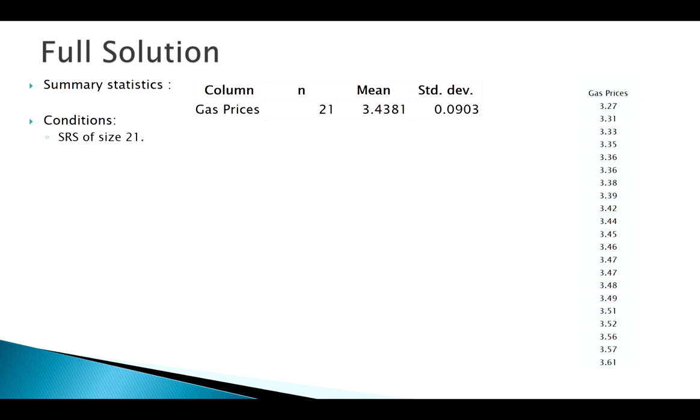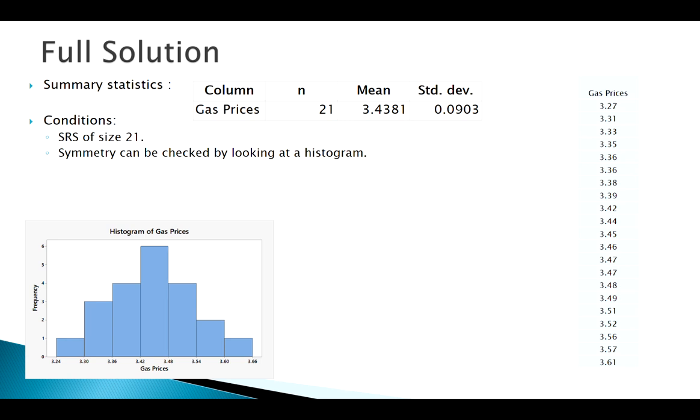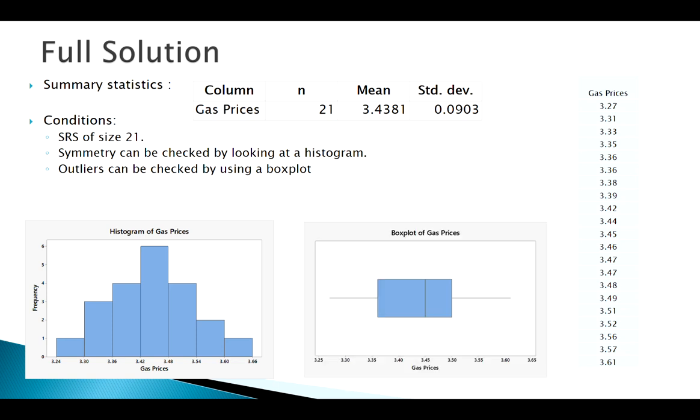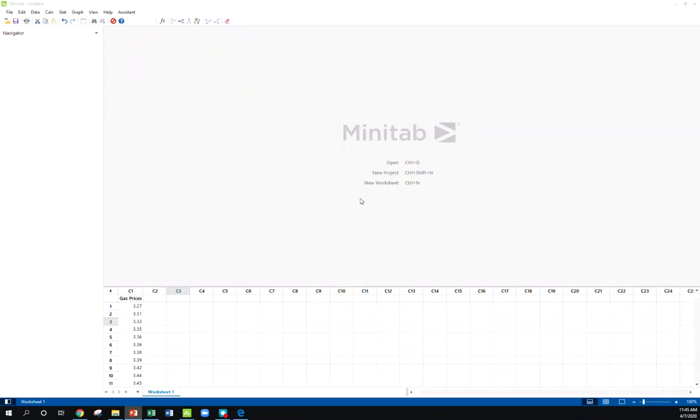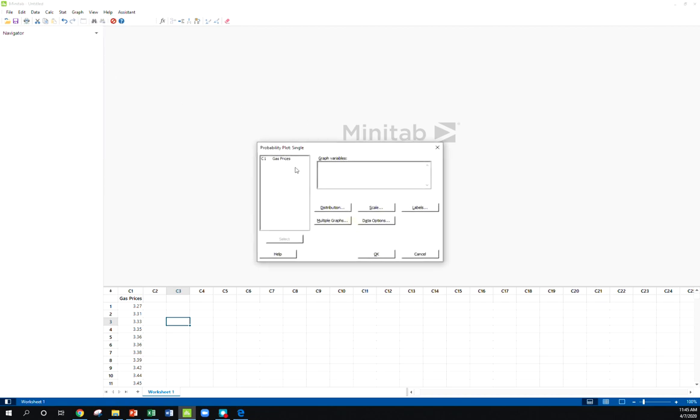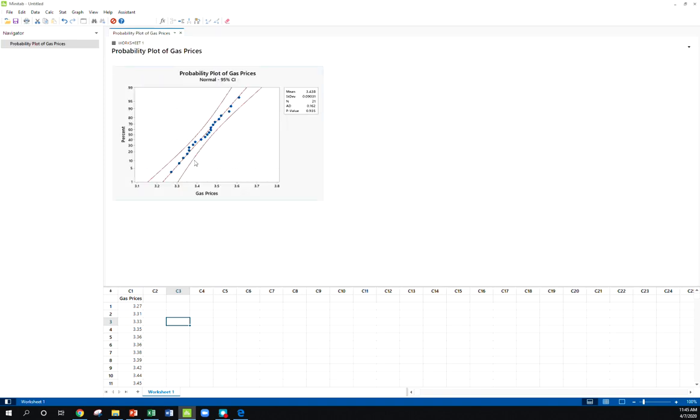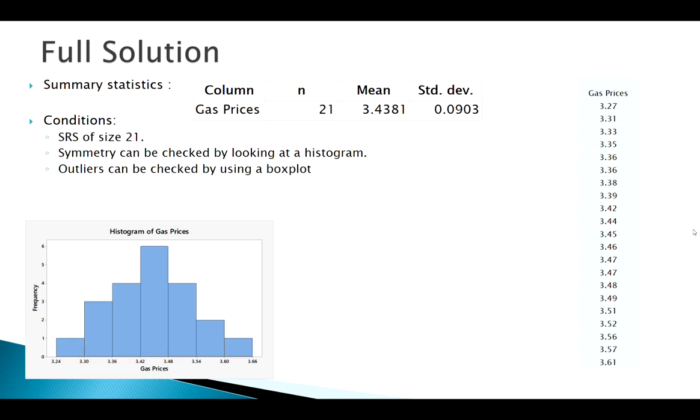We want to use t, but our conditions—we don't know sigma, small sample, that's usually the context we use t in. Then we need to check and make sure we have symmetry. Our histogram looks pretty good symmetry-wise. We also need to check for outliers. The box plot looks good. I'm going to graph a normal plot here in Minitab. The normal plot looks pretty good. We're in good shape—we've met the assumptions to use our t distribution.